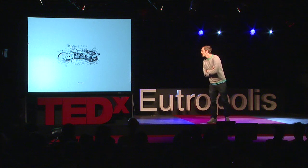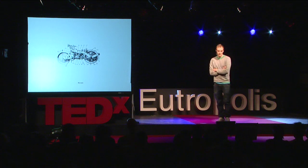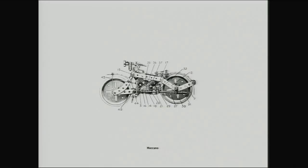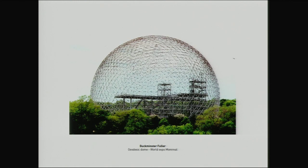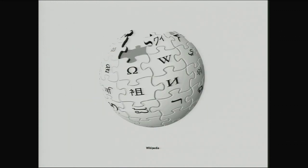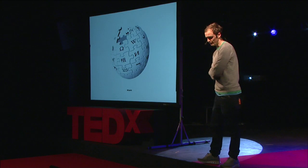Over time, people have built plenty of modular systems — not only in hardware such as toys, furniture, or even architecture, but we also start to see modular constructions within software. Wikipedia is one of the most well-known examples of this.